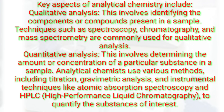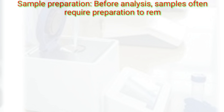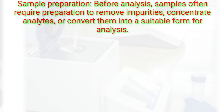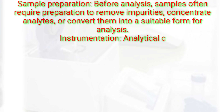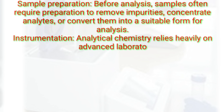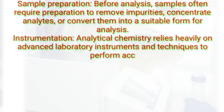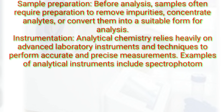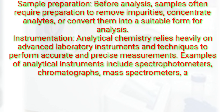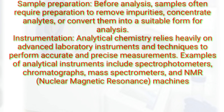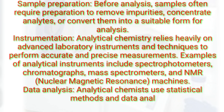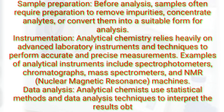Sample preparation: before analysis, samples often require preparation to remove impurities, concentrate analytes, or convert them into a suitable form for analysis. Analytical chemistry relies heavily on advanced laboratory instruments and techniques to perform accurate and precise measurements. Examples of analytical instruments include spectrophotometers, chromatographs, mass spectrometers, and NMR — nuclear magnetic resonance — machines.